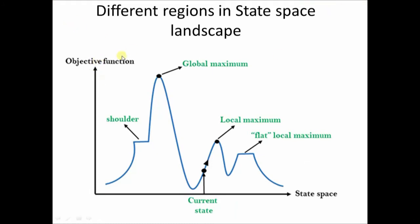These are the different regions of the state space discussed in the last lecture. We are going to explore each of these regions in depth. This region is called a shoulder — it is a plateau formation, a flat surface with an upward-going edge. We already know what a global maxima is. The current state is the state where the agent is currently present. This is called a local maxima, and this is a special local maxima called a flat local maxima or plateau.